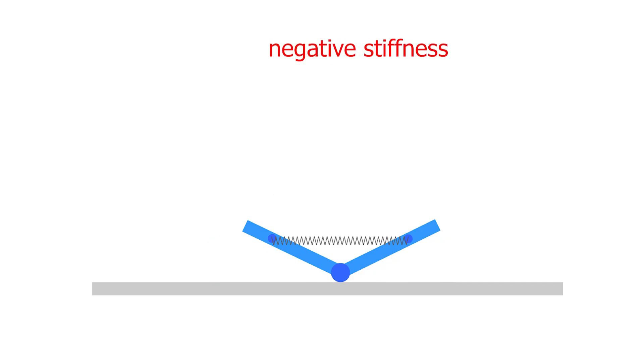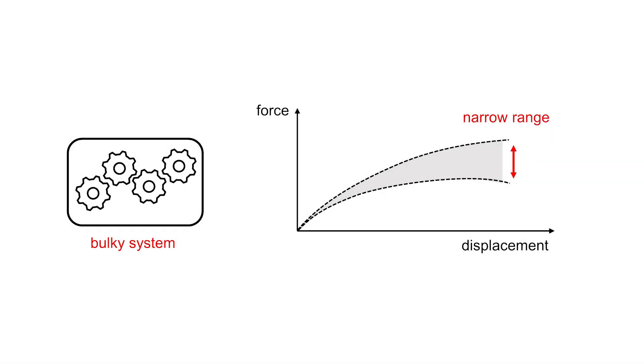And there is also negative stiffness, allowing us to release the stored energy all of a sudden. However, the tunable stiffness systems are commonly bulky and only tune the stiffness in a relatively narrow range.